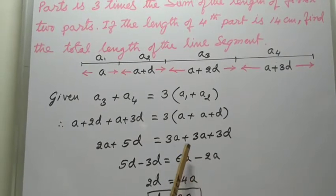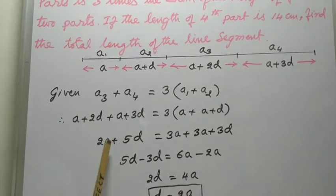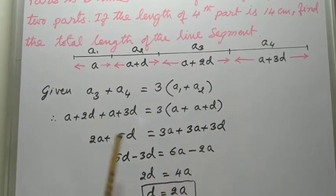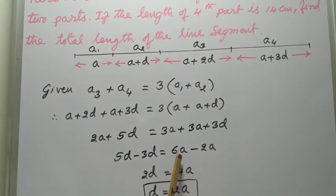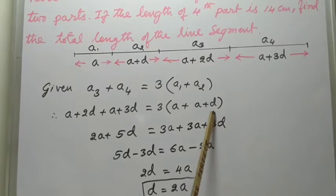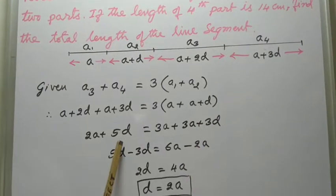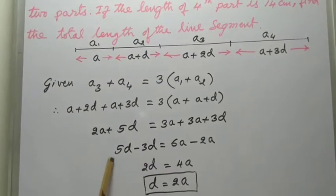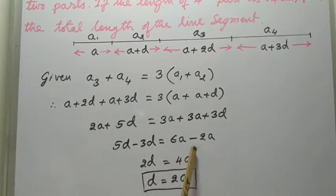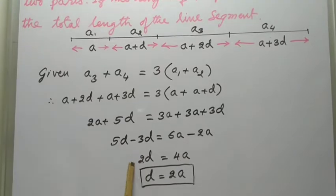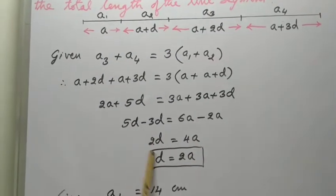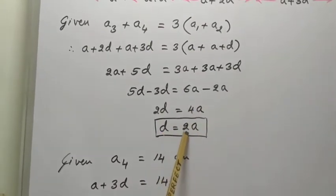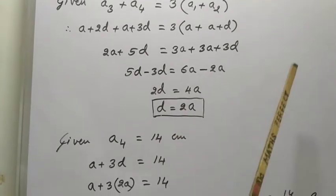Take the like terms to each side. The A terms give 6A minus 2A equals 4A on the right. The D terms give 5D minus 3D equals 2D on the left. Dividing both sides by 2 gives D equals 2A. This is a very important equation — let it be equation number 1.